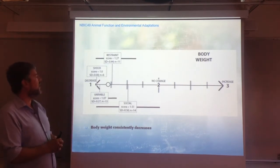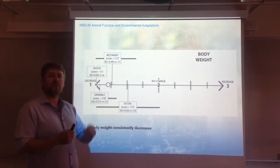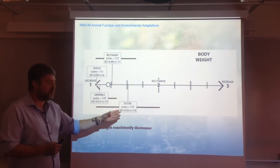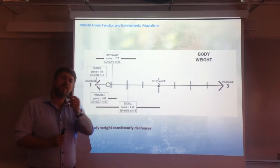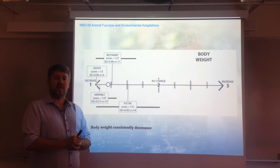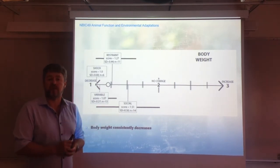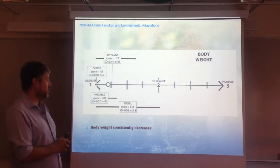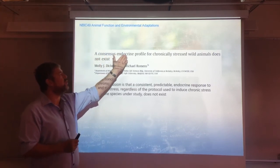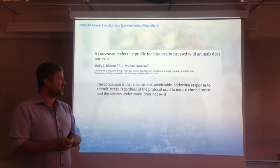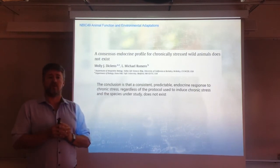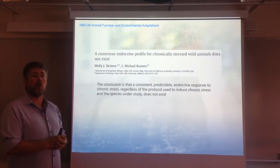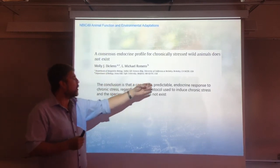The most general pattern the authors find — albeit from relatively fewer studies — is actually in body weight. Consistently, across four different types of stressors and in different species, chronic stress leads to a decrease in body weight. This brings back the argument Hans Selye already made in the 1940s: body weight is actually well representative of a chronic stress situation. What the authors conclude is what their title states: a consensus endocrine profile for chronically stressed wild animals does not exist. Although glucocorticoids are clearly released in a stress situation, in chronic stress not all individuals, not all species, with not all chronic stress models, give a consistent or predictable endocrine response.